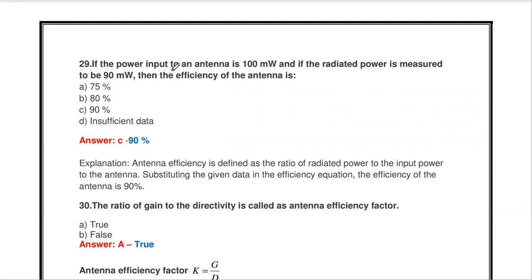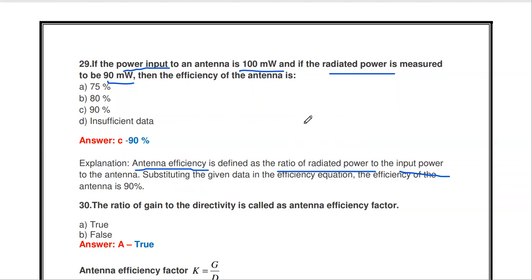If the power input to an antenna is 100 milliwatts and the radiated power measured is 90 milliwatts, what is the efficiency? Antenna efficiency is defined as the ratio of radiated power to input power. So 90 mW / 100 mW = 0.9, or 90%. The antenna efficiency is 90%.